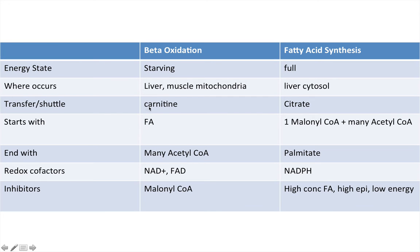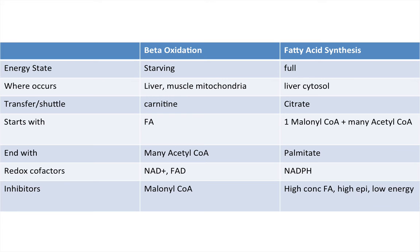What do we start with? Beta oxidation starts with a fatty acid; fatty acid synthesis starts with one malonyl-CoA, with many acetyl-CoAs being added onto it by fatty acid synthase. What do we end with? Beta oxidation ends with many acetyl-CoAs — just divide the chain in half. Fatty acid synthesis ends with palmitate. The redox cofactors: beta oxidation uses NAD+ and FAD; fatty acid synthesis uses NADPH. Inhibitors: malonyl-CoA inhibits beta oxidation — the shot blocker. Fatty acid synthesis is inhibited by high fatty acid concentration through a feedback loop, as well as high epinephrine or low energy states.